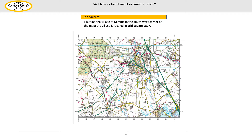First, our task is to find the village of Kemble in the south-west corner of the map. The village is located in grid square 9897. This is very important — we need to remember where it is located. Now I'm going to show you how to use this. You need to look along the bottom and find number 98. Point at it and shout yes once you've found it.